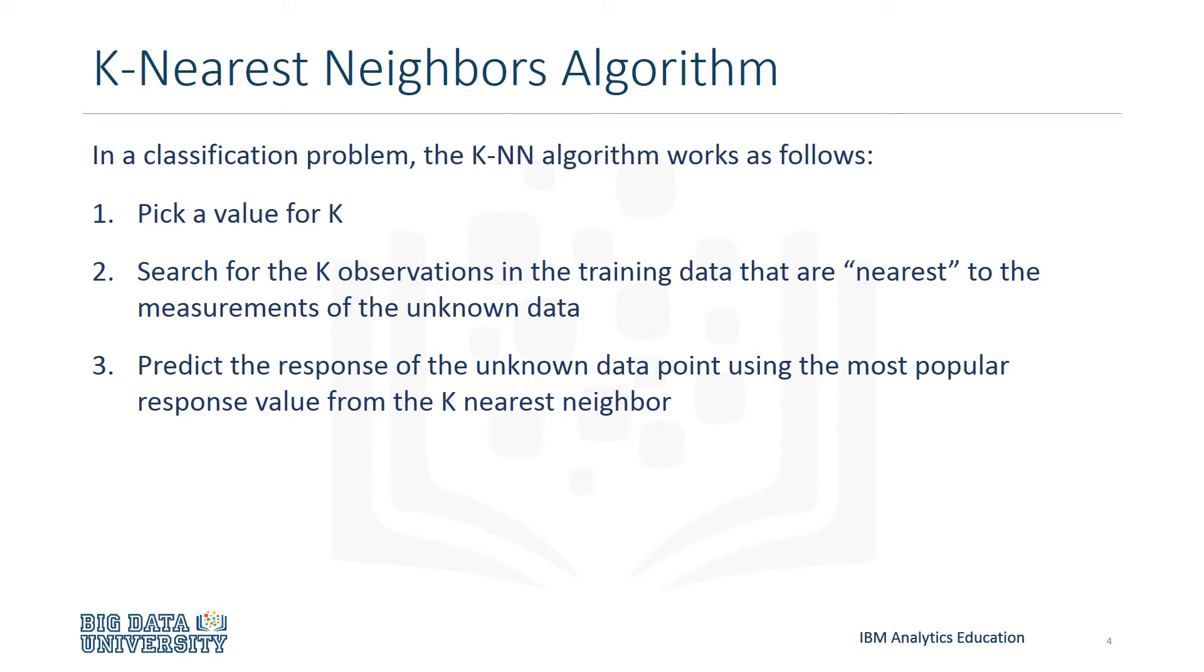In a classification problem, the k-nearest neighbors algorithm works as follows: Pick a value for k. Search for the k observations in the training data that are nearest to the measurements of the unknown data. Predict the response of the unknown data point using the most popular response value from the k-nearest neighbor.